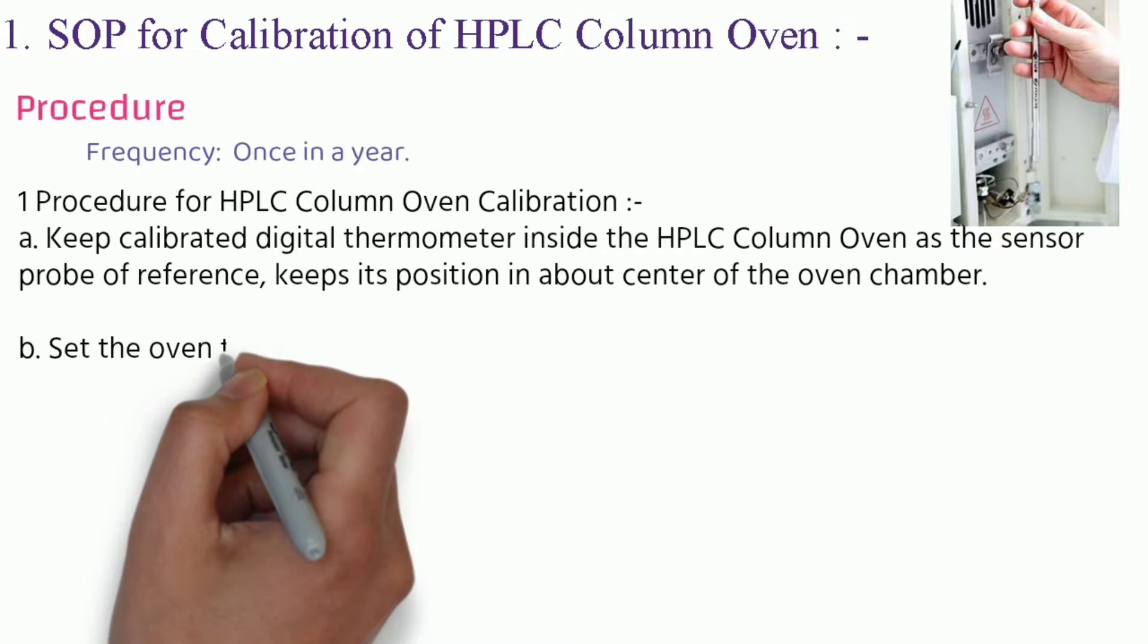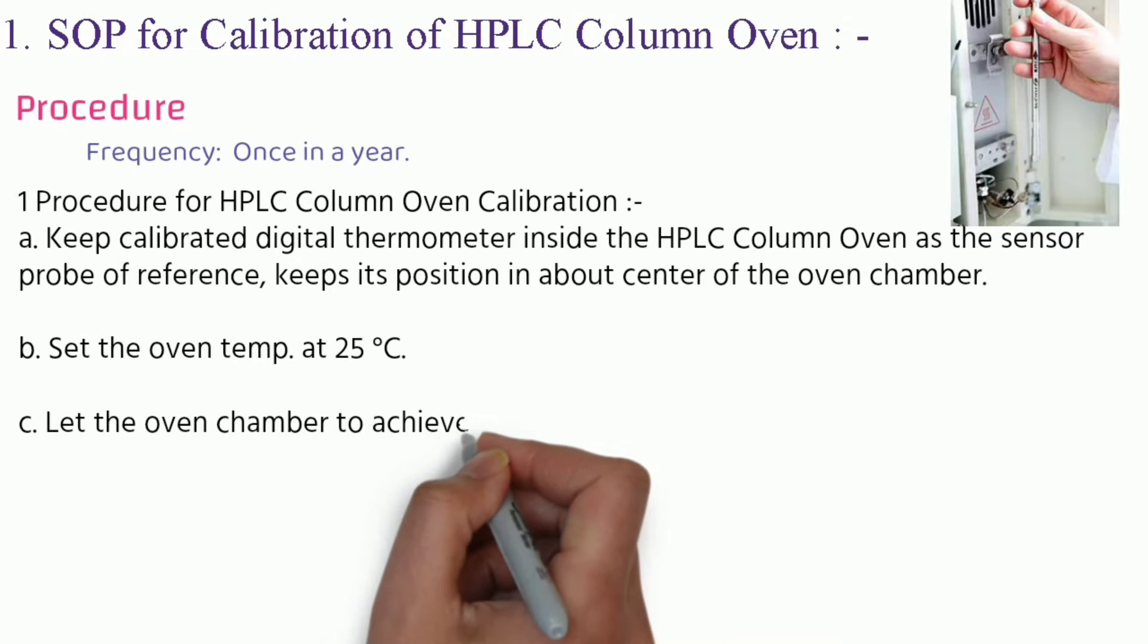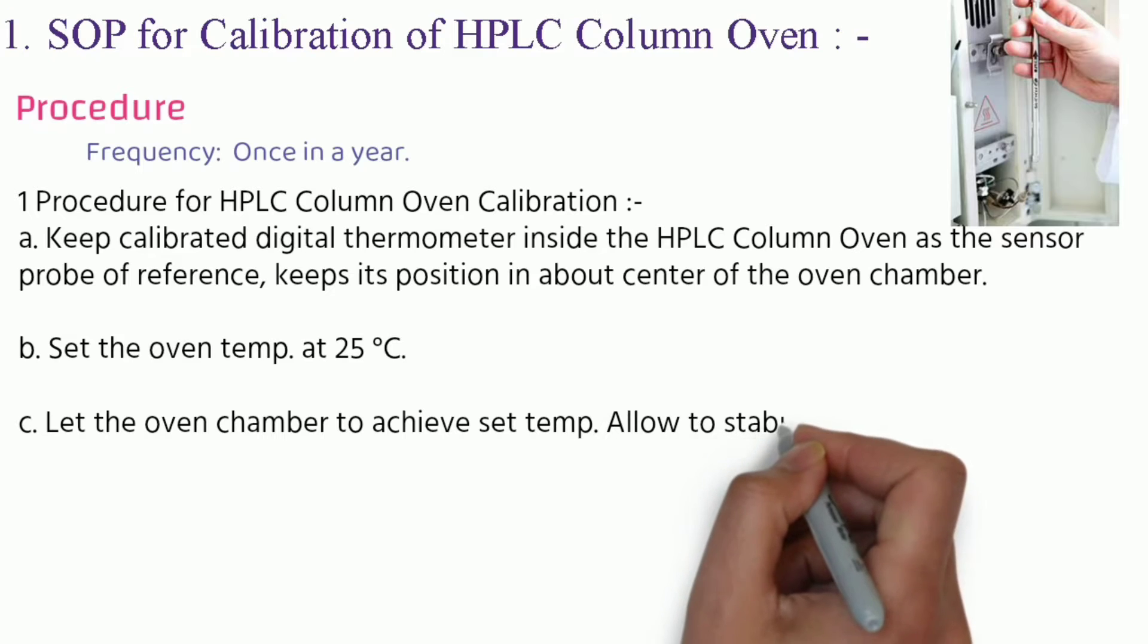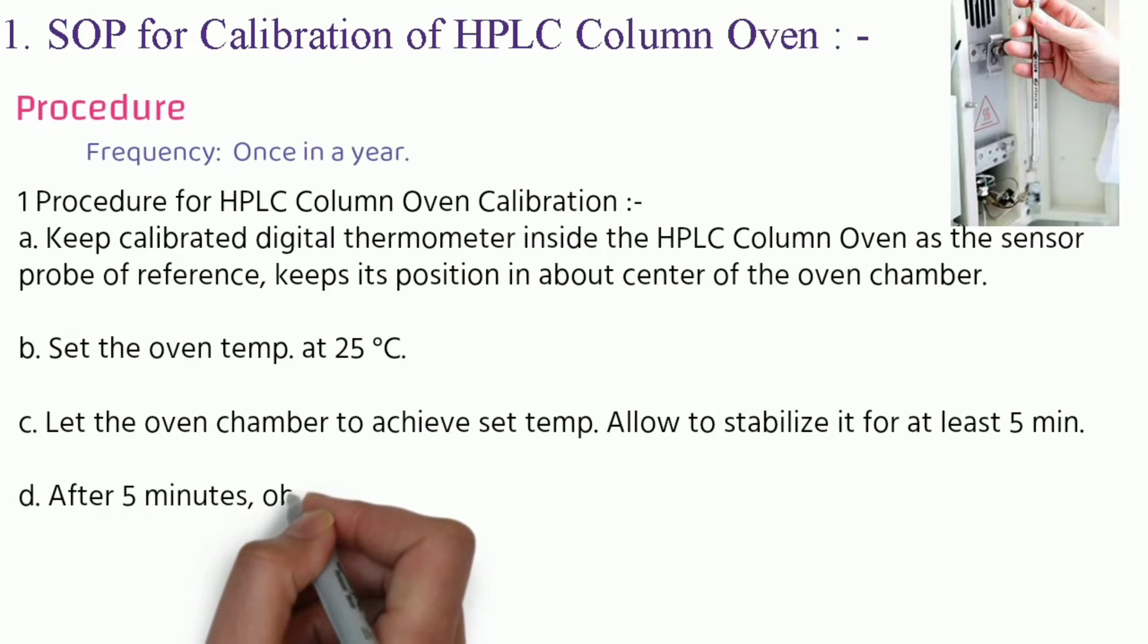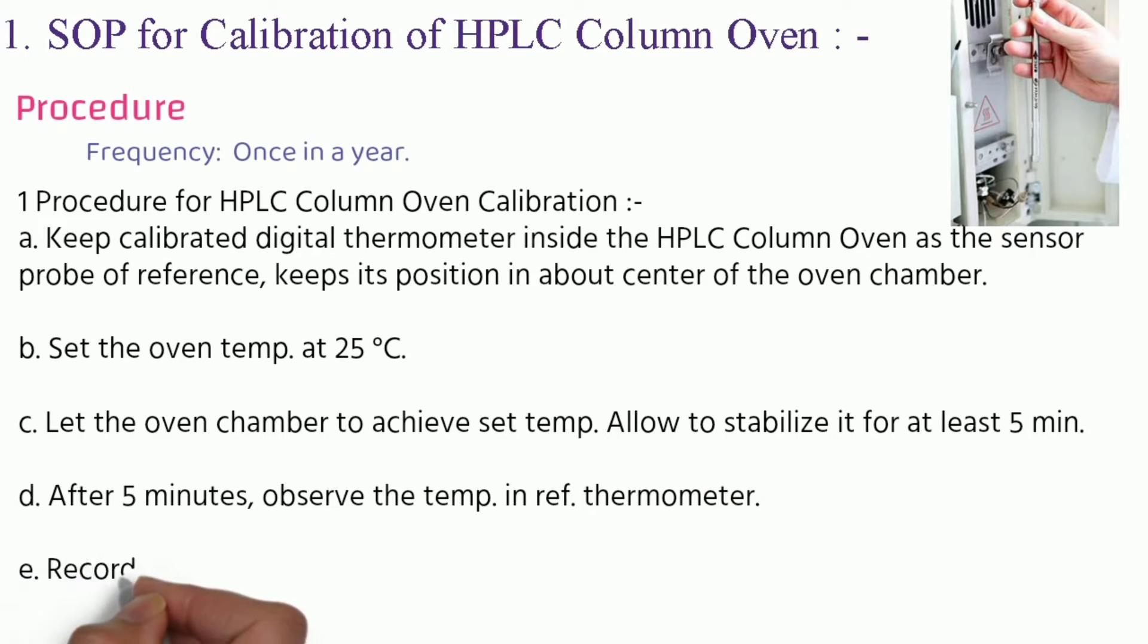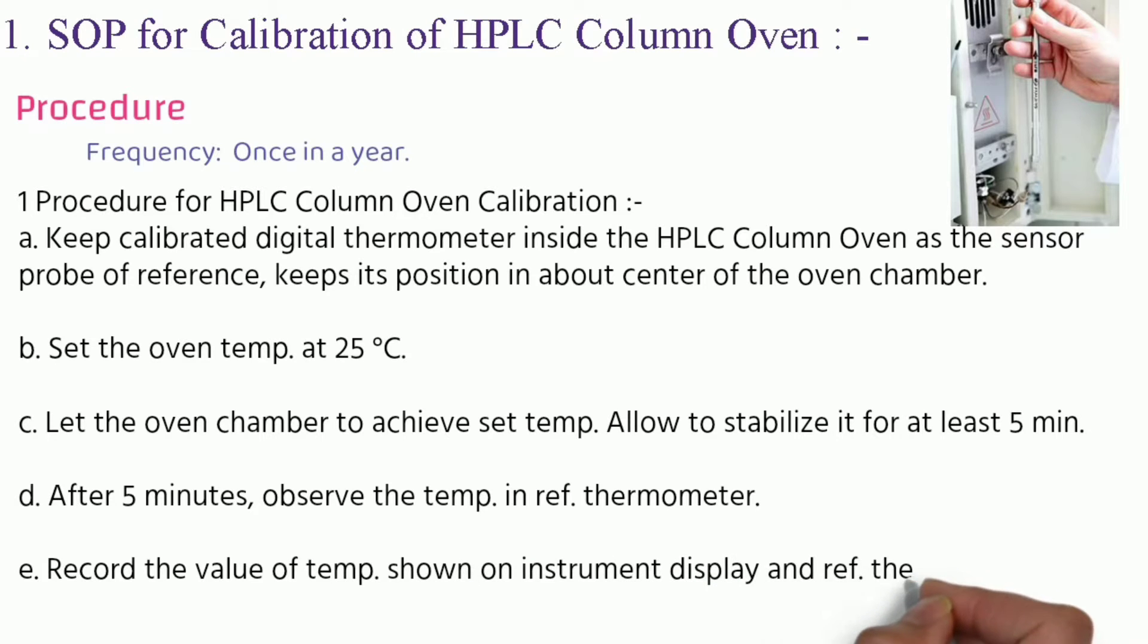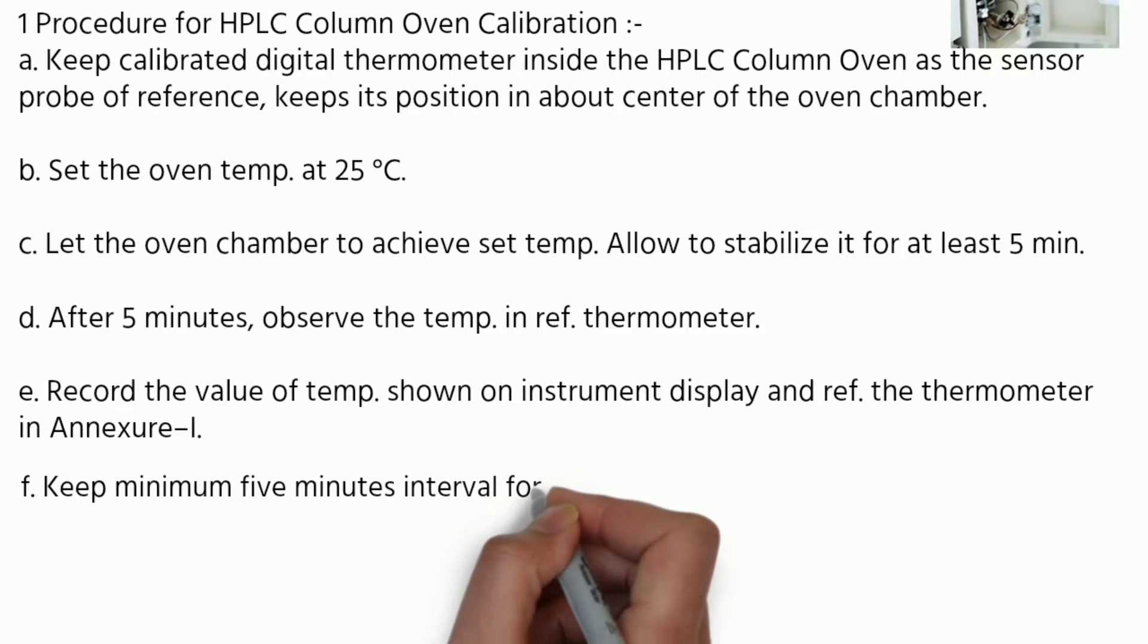Set the oven temperature at 25 degrees Celsius. Let the oven chamber achieve the set temperature. Allow to stabilize it for at least five minutes. After five minutes, observe the temperature in reference thermometer. Record the volume of temperature shown on instrument display and reference thermometer in annexure 1. Keep the minimum five minute interval for first and second readings.